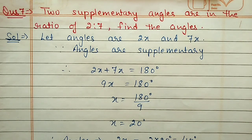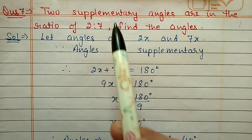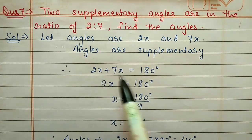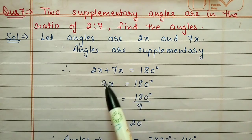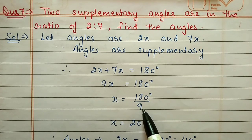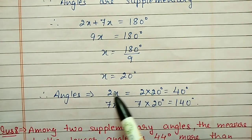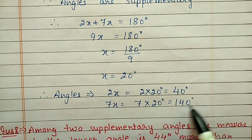Question number seven: two supplementary angles are in the ratio 2:7. Find the angles. Let the angles be 2x and 7x. Since they are supplementary, 2x + 7x = 180 degrees, so 9x = 180, giving x = 20 degrees. The first angle is 2 × 20 = 40 degrees, and the second angle is 7 × 20 = 140 degrees.